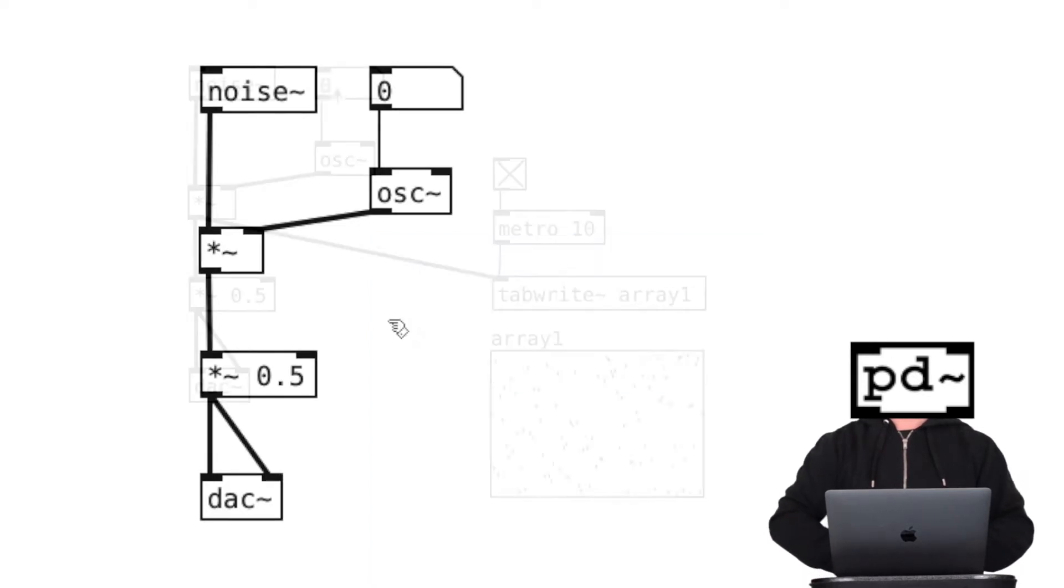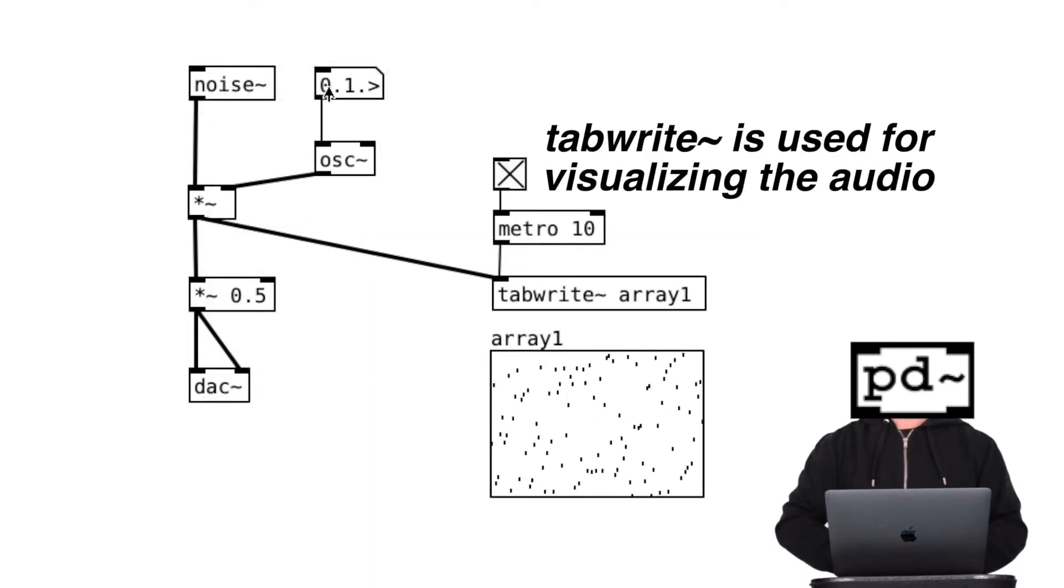So let's hear it in action. Type in 0.1 in the number object. 0.1 hertz will make the LFO really slow. And turn on the audio. Do you hear the white noise going up and down in volume at a really slow speed? That's LFO in action. And if we increase the frequency value, we hear the volume go up and down at a faster rate.